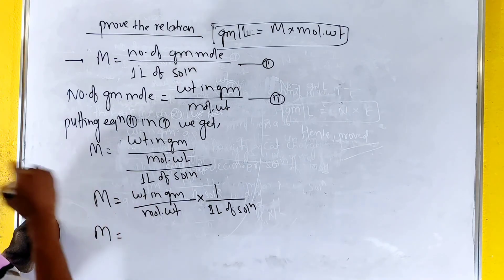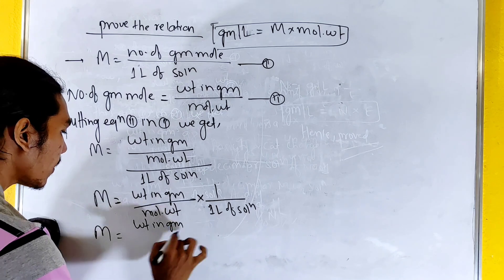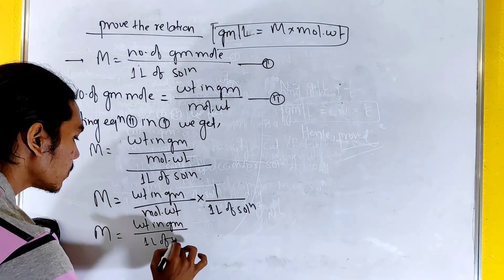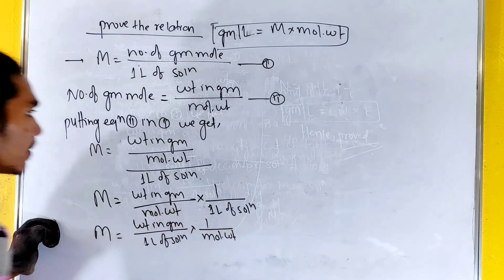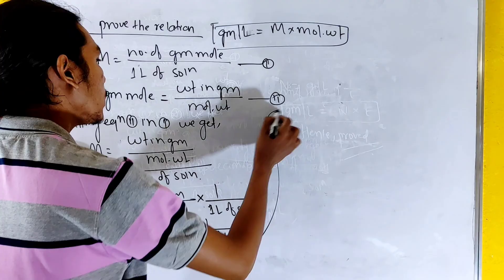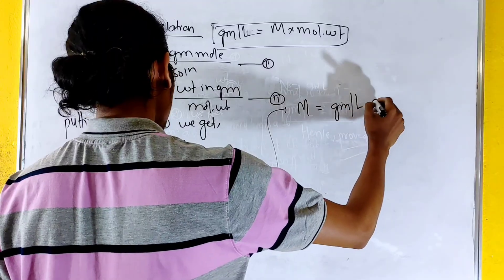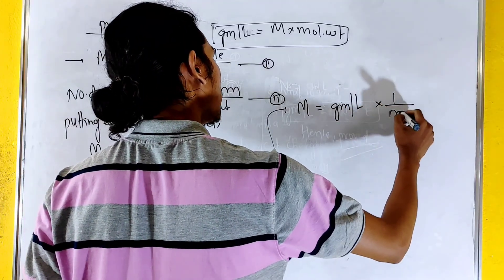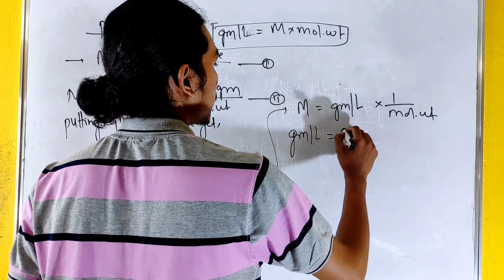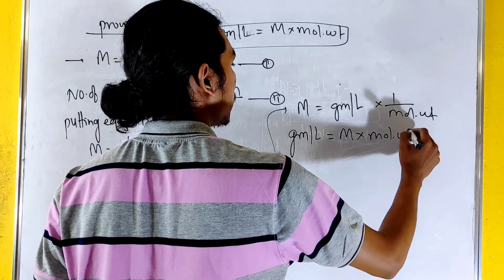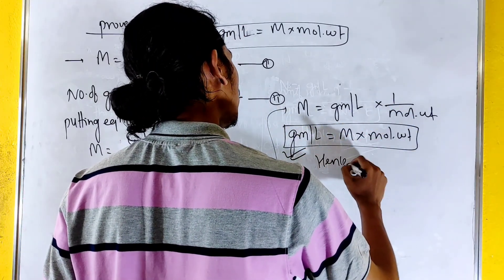M equals weight in gram divided by 1 liter of solution, into 1 divided by molecular weight. So m equals gram per liter into 1 by molecular weight. Therefore, gram per liter equals molarity into molecular weight. That relation is now proved.